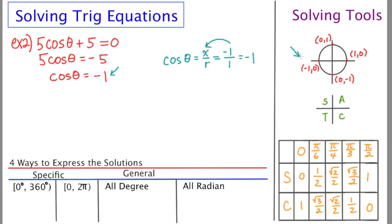So the answer is 180. Theta is equal to 180 degrees. Easy, quick. So we'll say that the specific degree answer is 180. We'll say that the specific radian answer is pi.